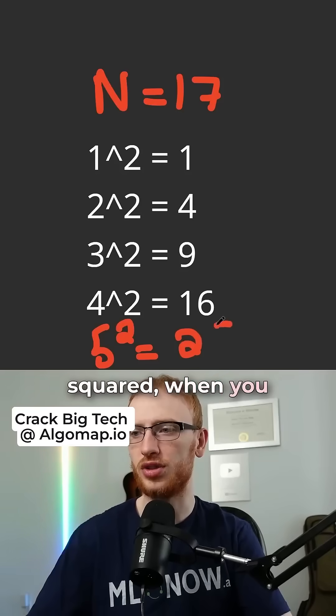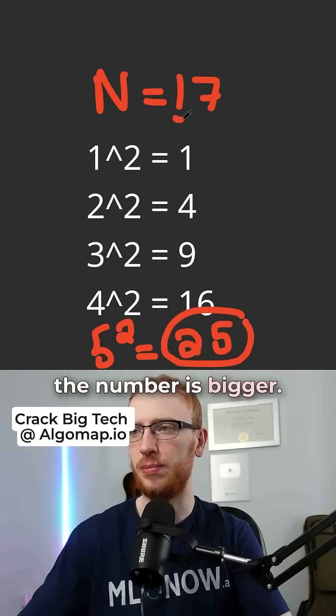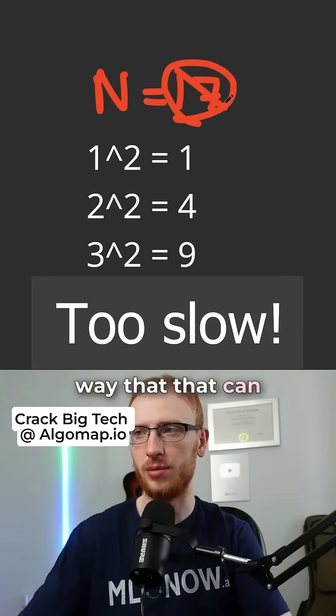And once you get to the point, a.k.a. 5 squared, when you surpass that number, the square of the number is bigger, well then there's no way that that can be a perfect square.